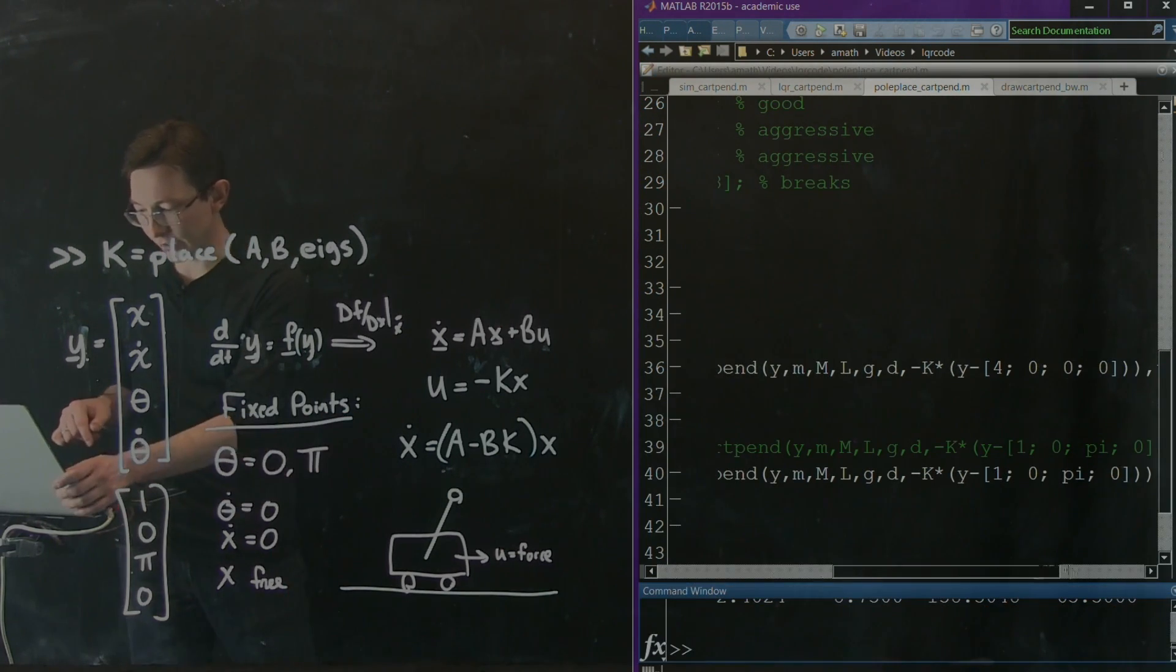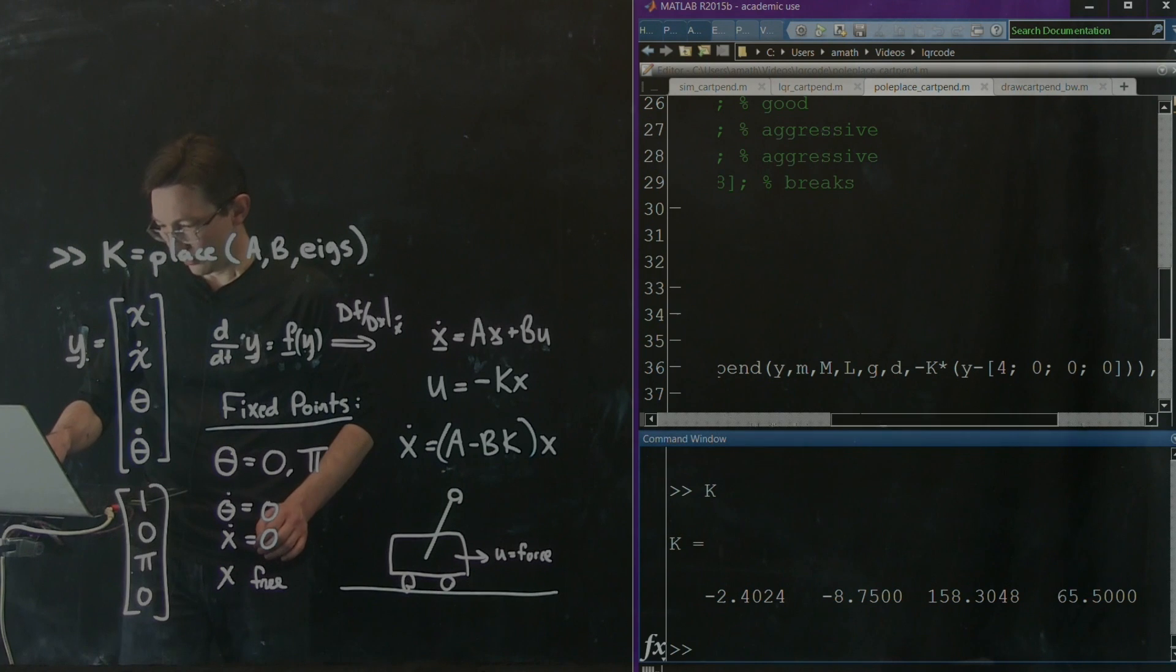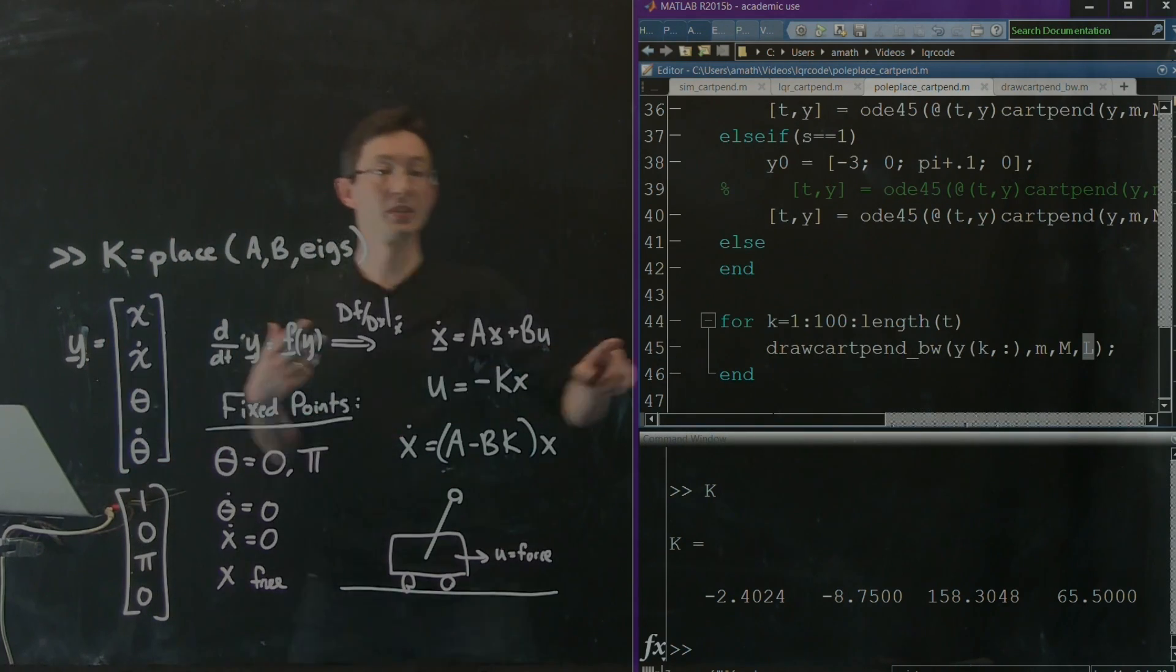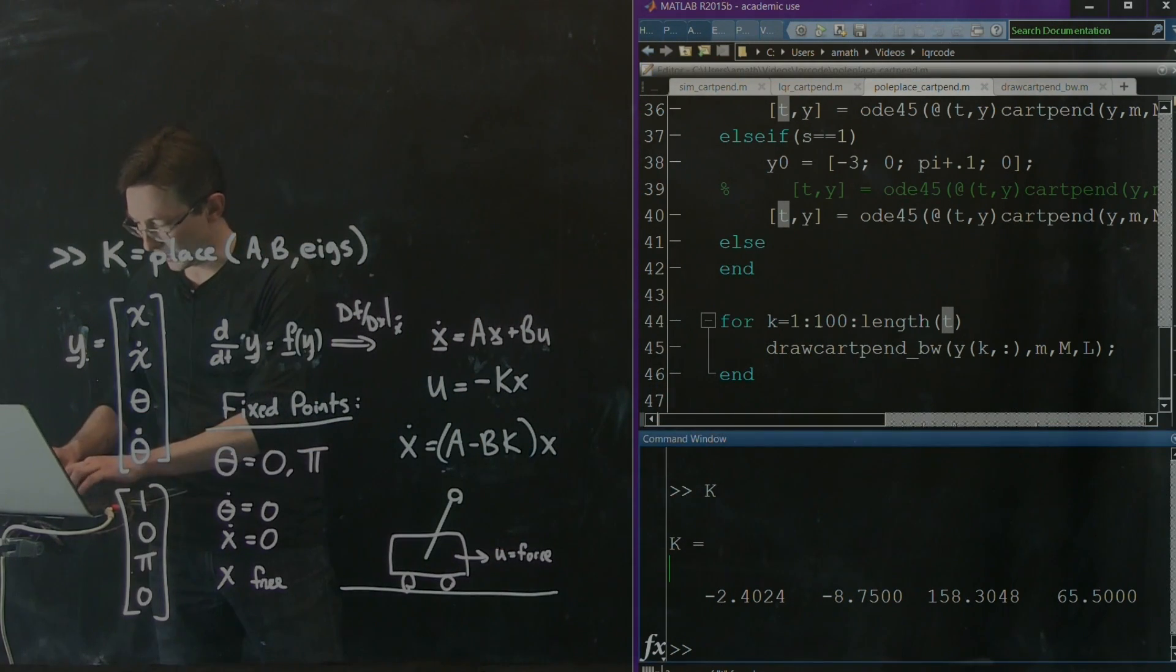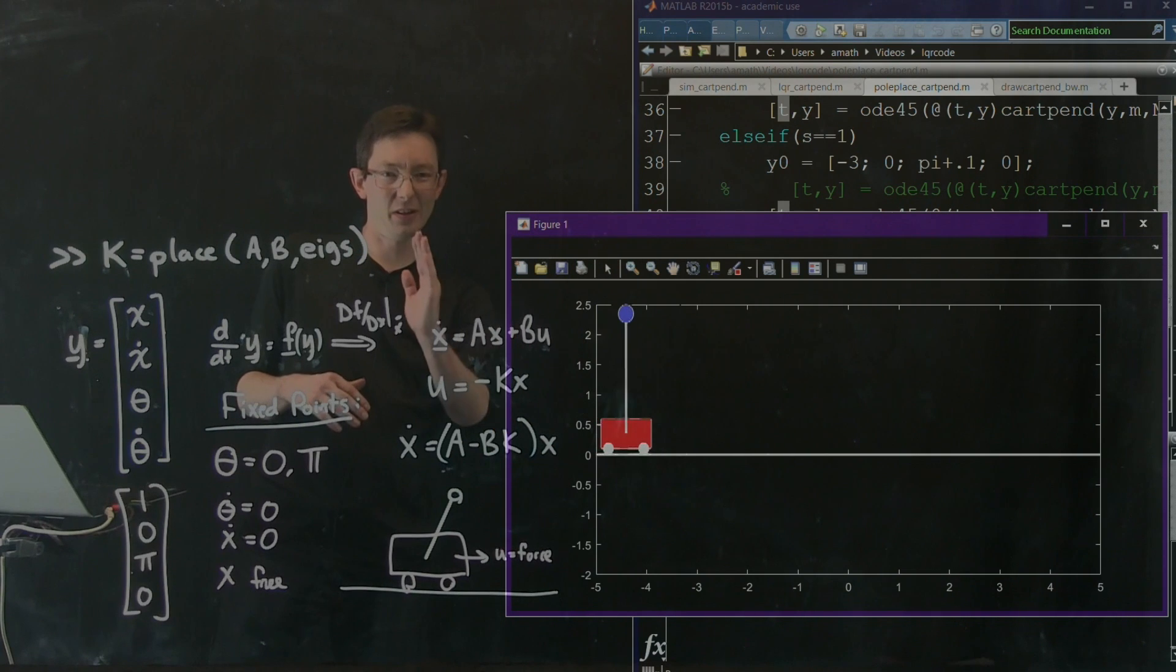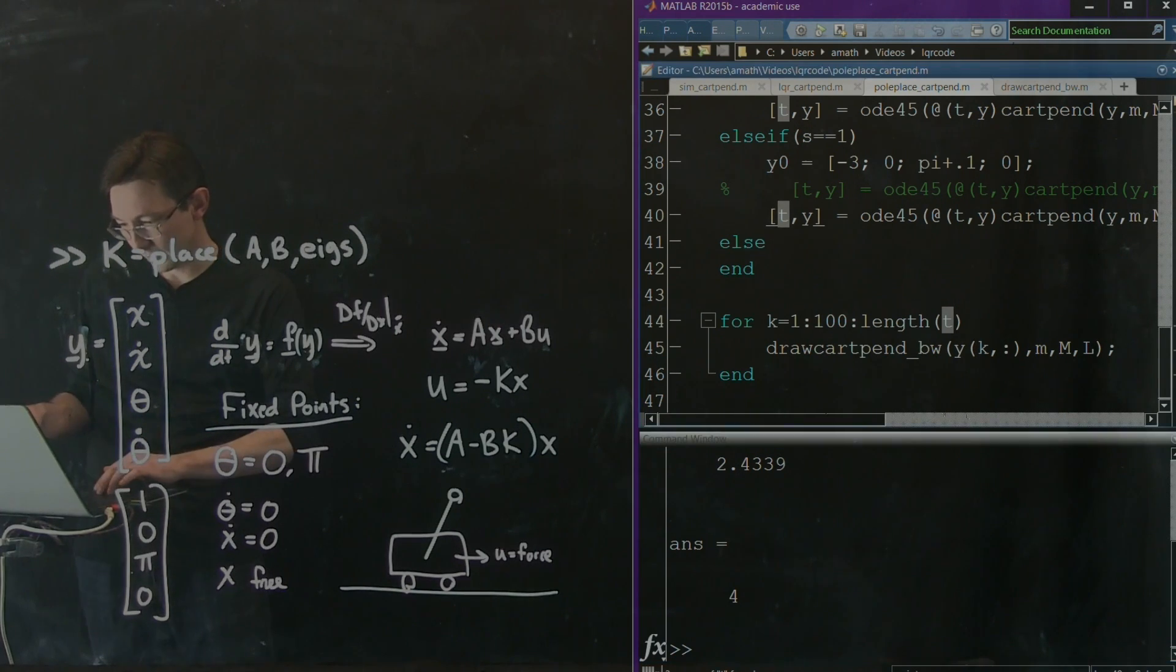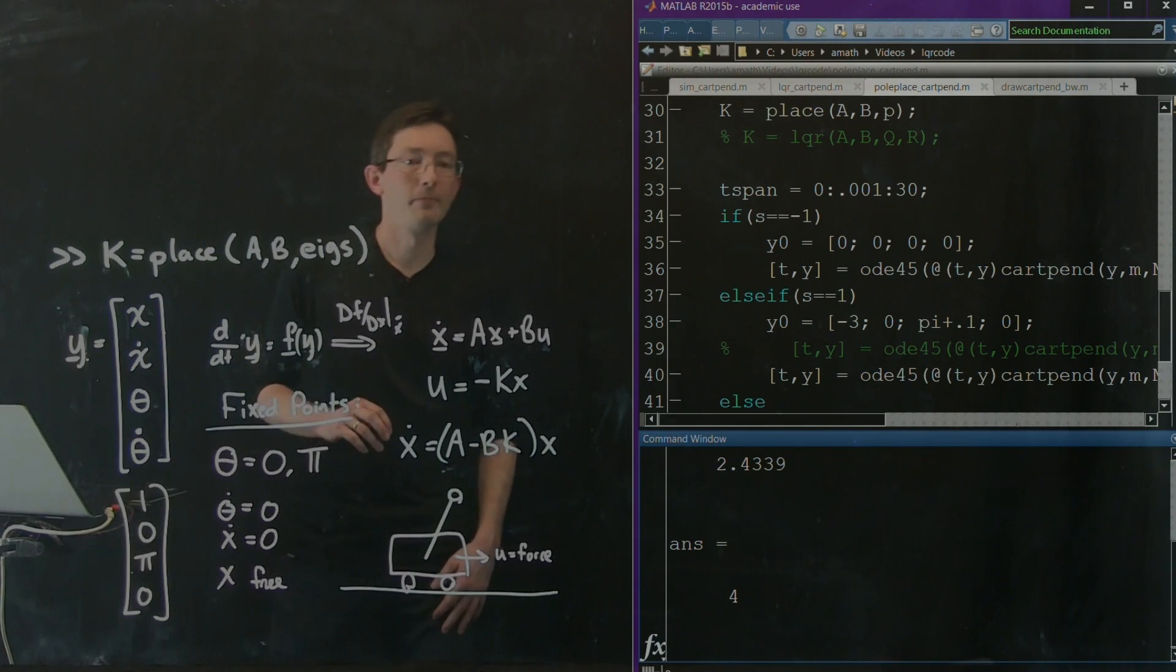And again, I can just run this code. Sorry, I'm trying to move this up. And at the end of my code, I'm going to draw the solution. So once I run this simulation, I'm going to plot the pendulum doing what I want it to do. Okay. So let's do pole place cart pend. That's my script. I'm going to hit enter. I'm going to hope for the best. Oh, it went off the screen, but then it came back. Okay. So let's see if I can do better. I think I need to integrate for longer. Let's try this one more time. It's not the most impressive.